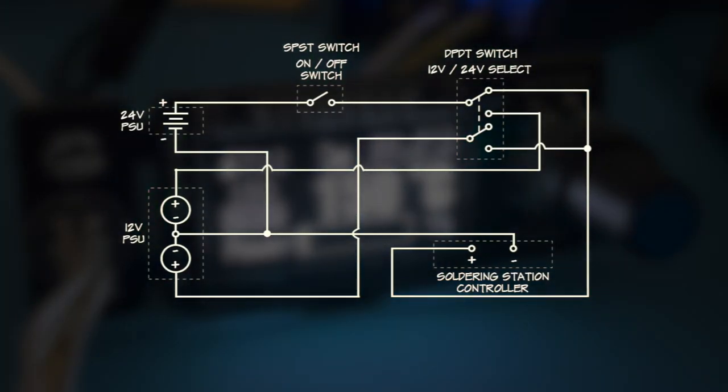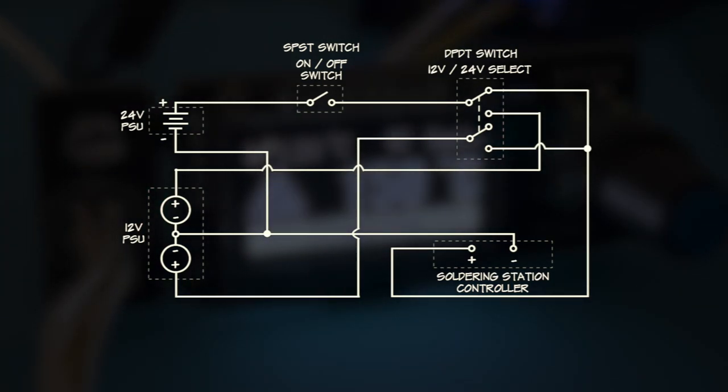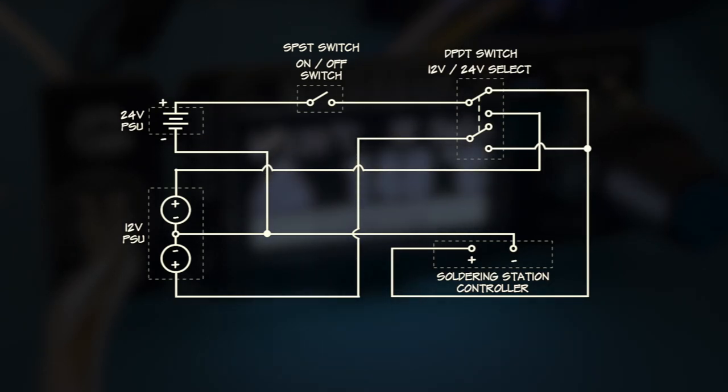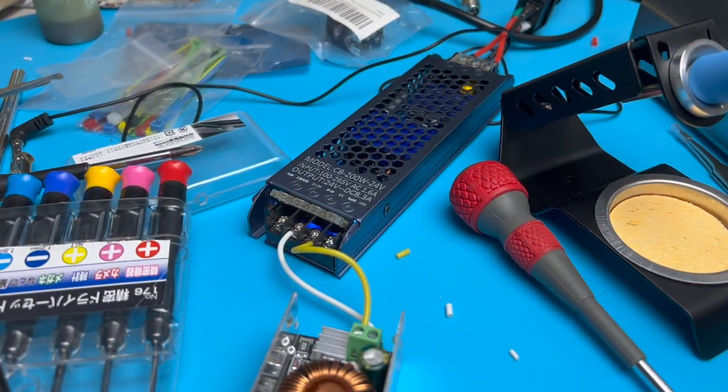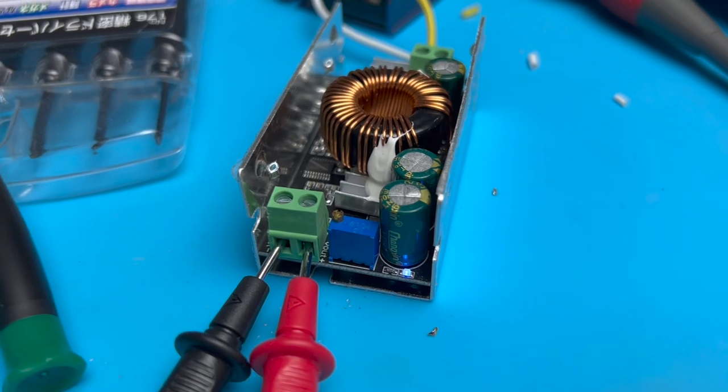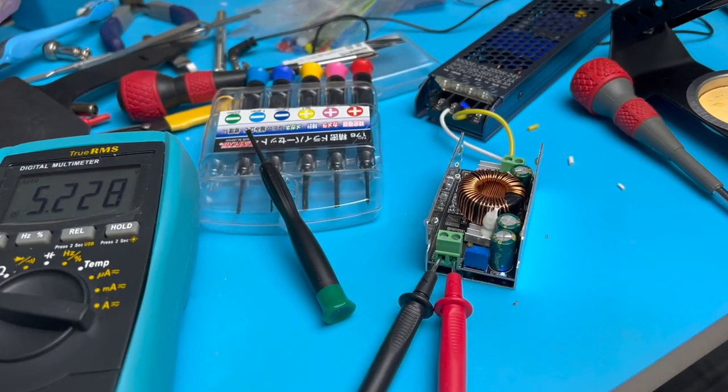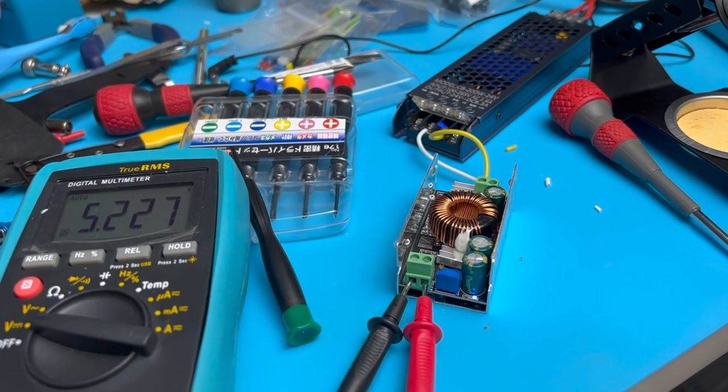So I came up with this circuit which includes a 24 volt external power supply connecting to an enclosure which houses the rest of this circuit, which includes an internal 12 volt step down power supply. Here's the step down power supply connected to the 24 volt LED driver. The step down power supply is variable, so the output needs to be adjusted to 12 volts.